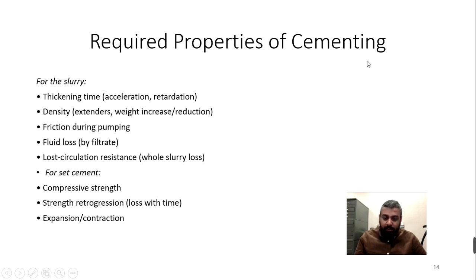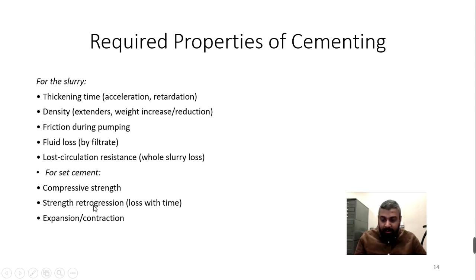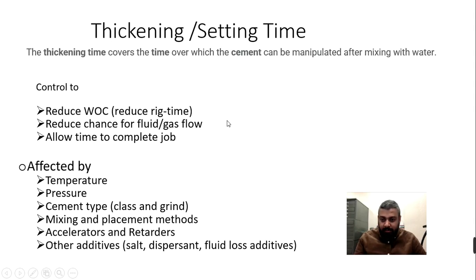For the primary cementing job, the key properties we look for are: thickening time, density, friction, fluid losses, loss circulation resistance, compressive strength, and strength retrogression — meaning whether the cement loses strength over time — as well as contraction and suspension.